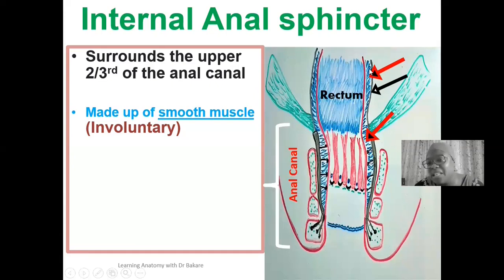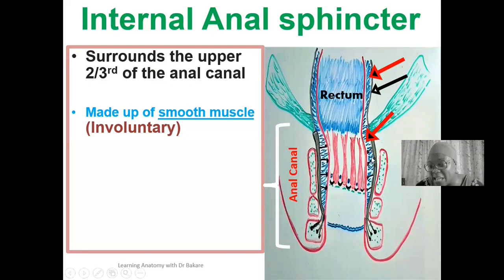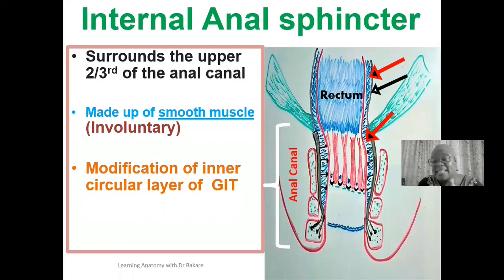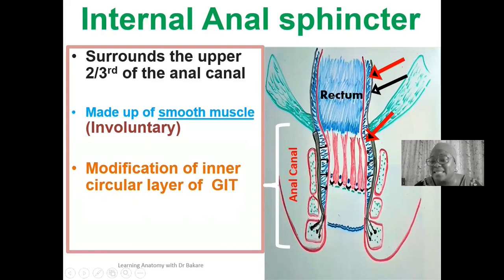The inner circular layer tends to extend downward, surrounding the wall of the anal canal. This is where the inner circular layer of the gastrointestinal tract is transformed into the internal anal sphincter — that is why it is an involuntary type of muscle, made up of smooth muscle fibers. So the internal anal sphincter is a modification of the inner circular layer of the gastrointestinal tract.